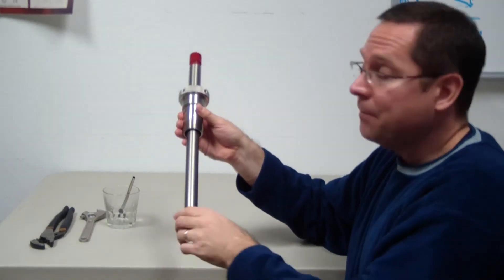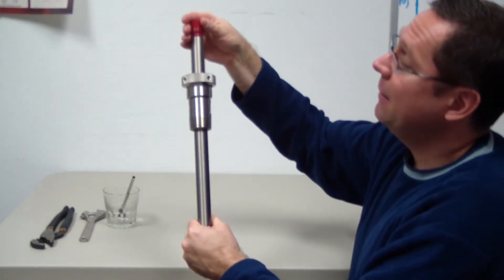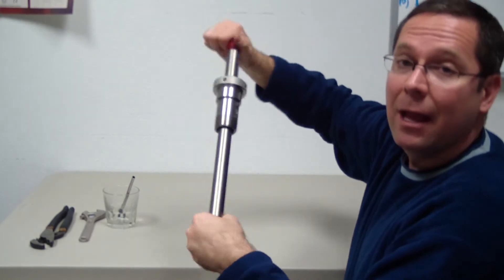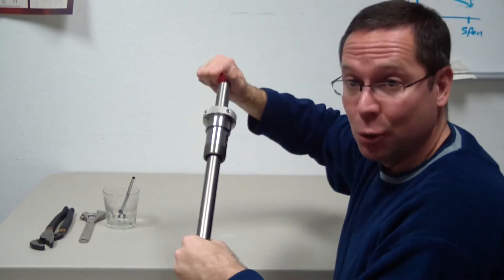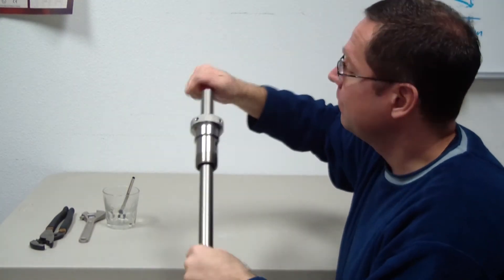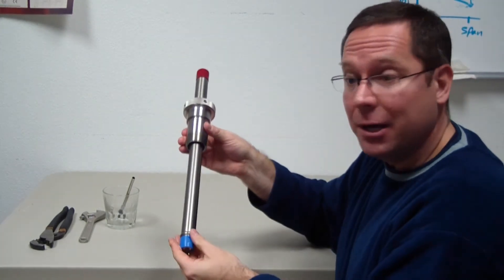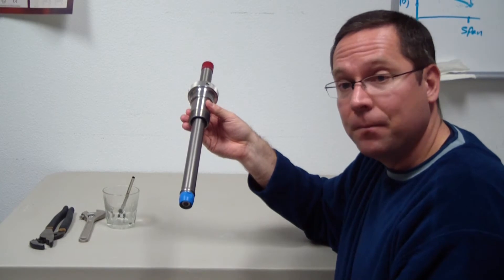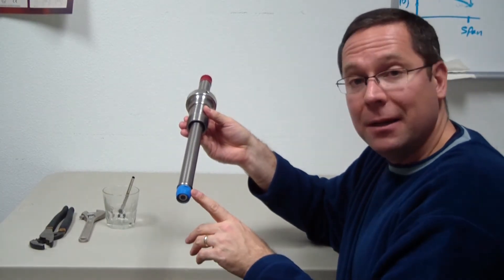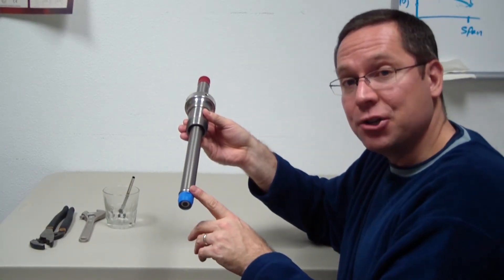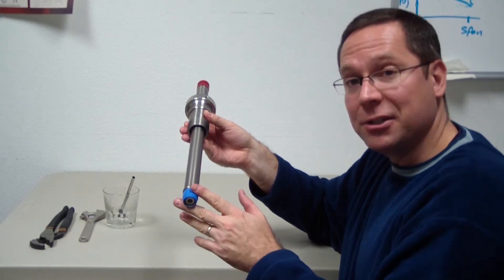As I push the sensor in, it'll push out the back piece a bit, and now I can hand tighten it. No tools are needed. Once I can't turn it anymore, my sensor's assembled. The tip on the sensor will hit against the back of the metallic sheath, and that will withstand your process pressure.